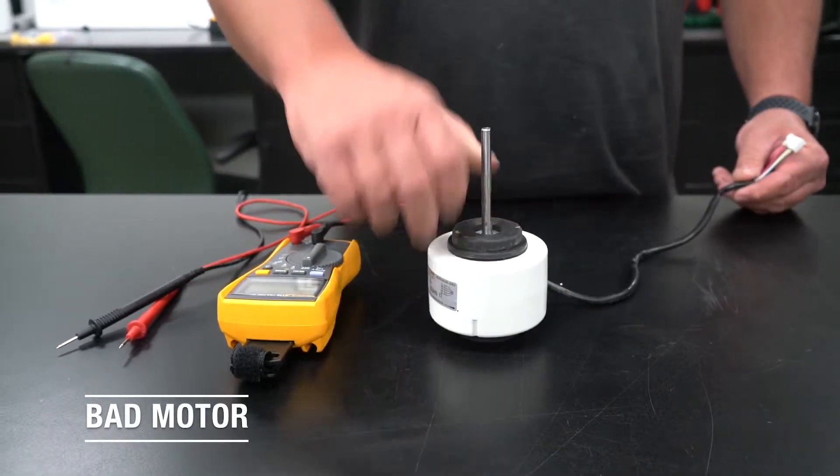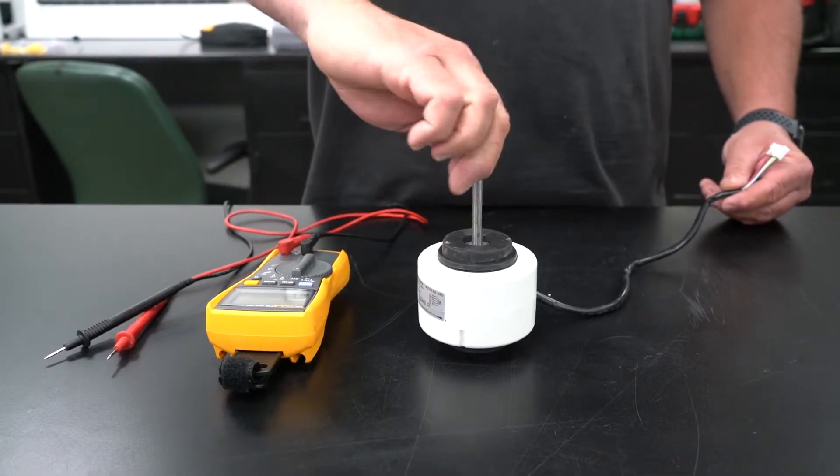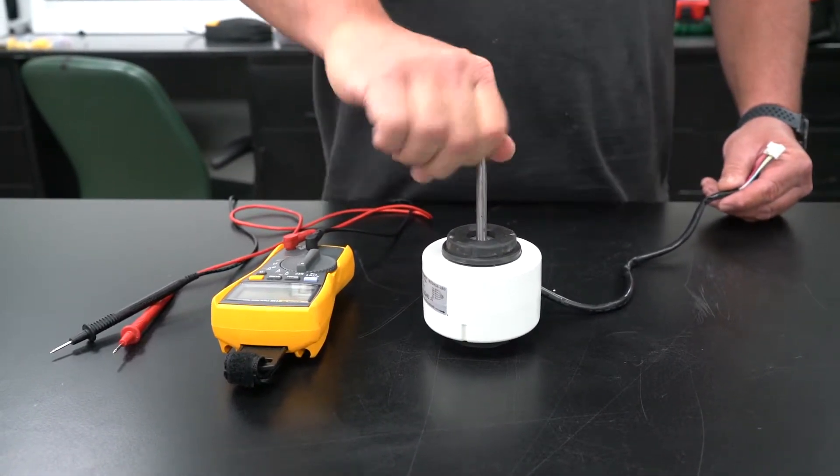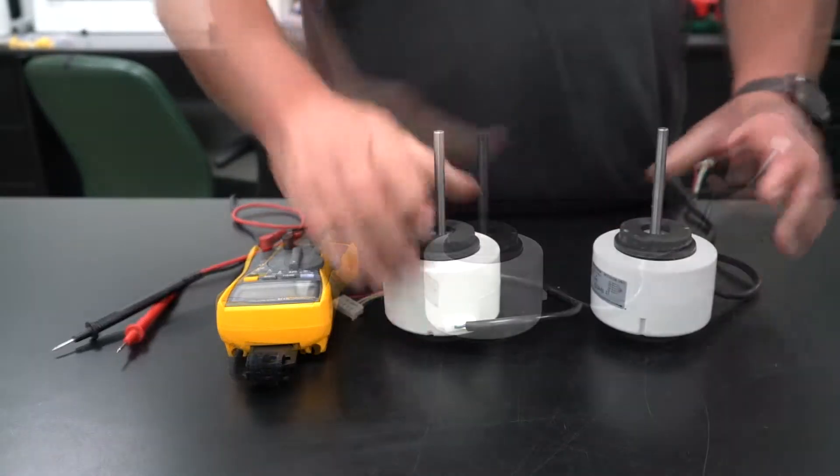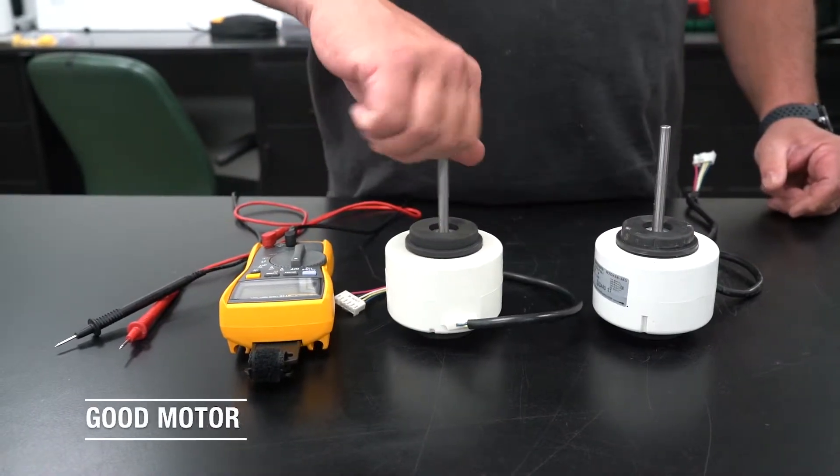If you try to spin the motor there's a lot of resistance. It's hard to spin. Whereas on a newer motor this spins freely.